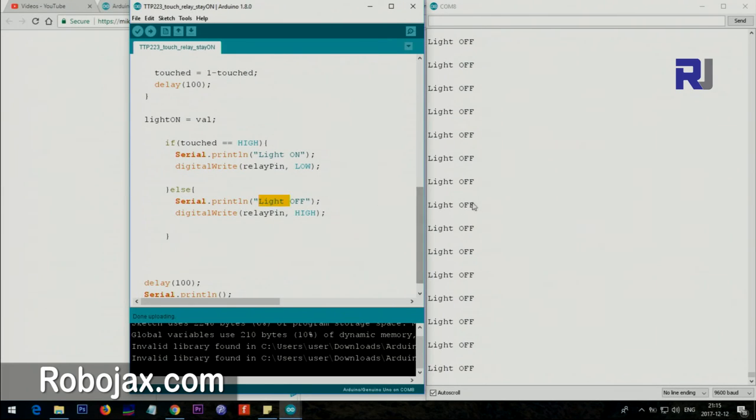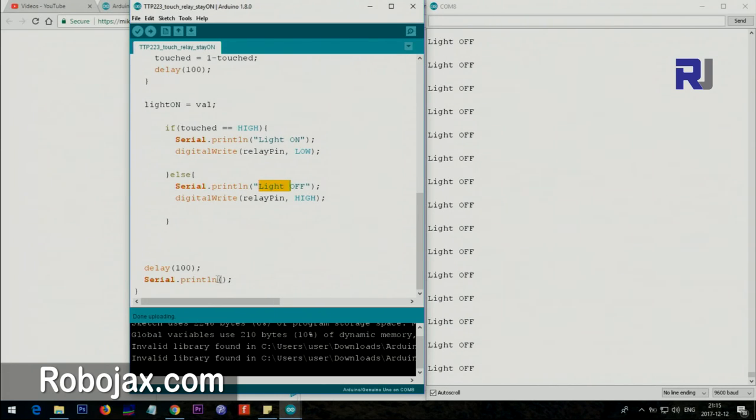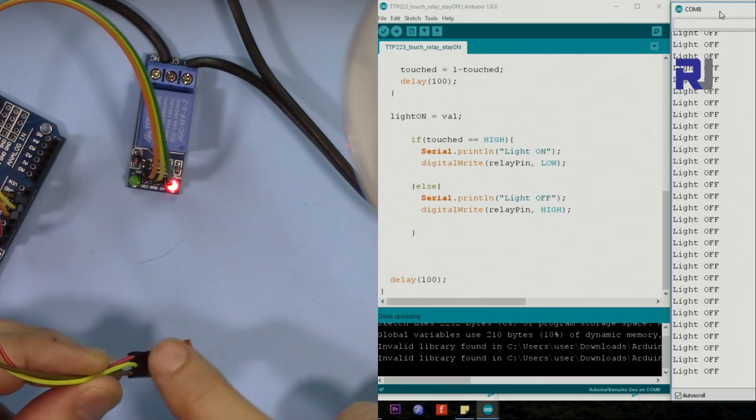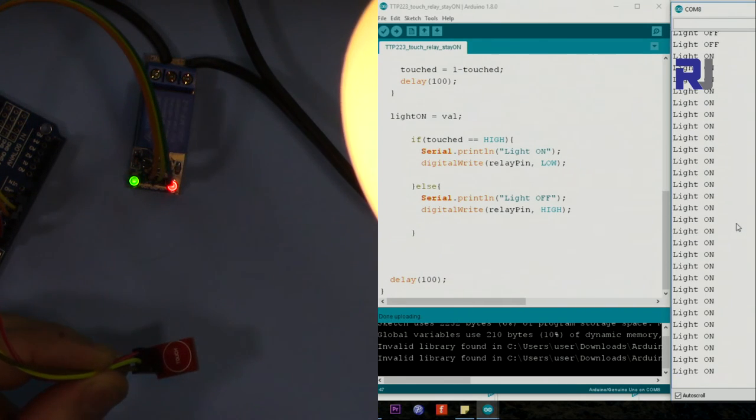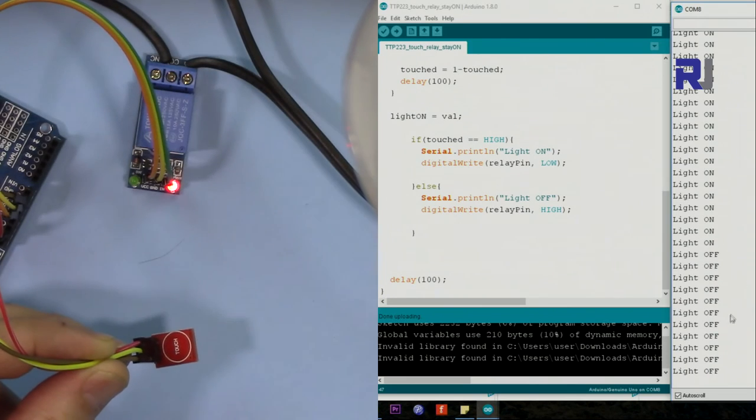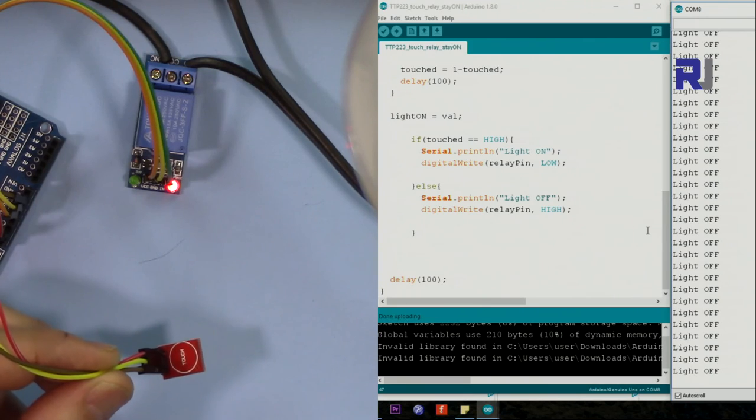This relay that I have will be activated when the pin is low. Otherwise, or else, light off, which is now it's printing, and relay pin high. After that it just waits hundred milliseconds which is one tenth of a second and then it prints this. This is just printing an extra space here for us so if you want you can just delete it. As I touch you see on this side it says light on, and when I touch it says light off. So this is how it works very easily.